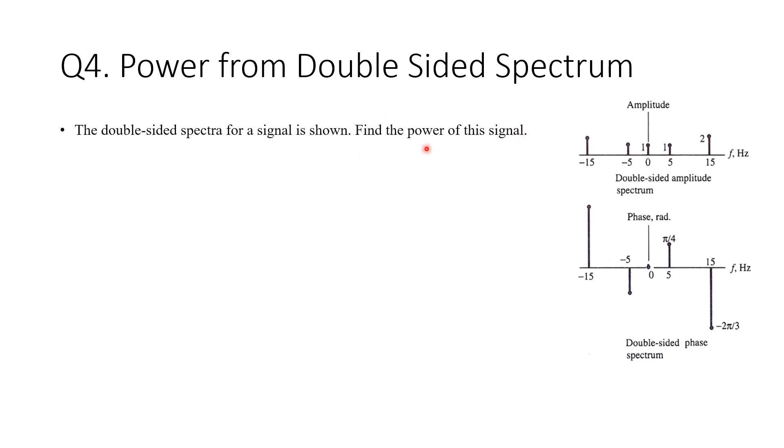First, you need to know that the power does not depend on the phase, so there is nothing that we take from here. And going back to Parseval's theorem or the power of phasors, you'll find the power is just the sum of the squares.